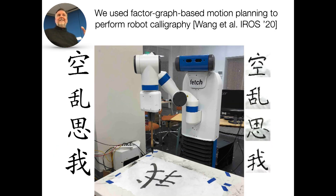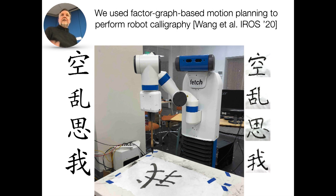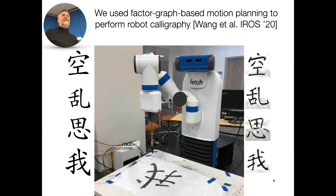I've also gotten interested in using robots for art. One of the first things we did was calligraphy. We can give the Fetch robot any Unicode character, and it will try to paint it by solving an optimization problem with GTSAM — Chebyshev polynomials for each stroke, with a differentiable image formation model inside. It's still open loop, so my Taiwanese friend said the calligraphy is at the level of an eight-year-old, but we're making progress.